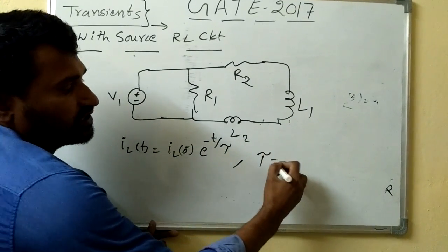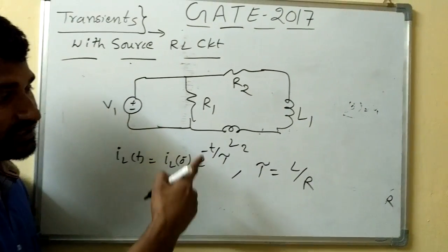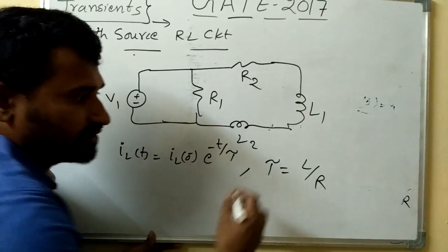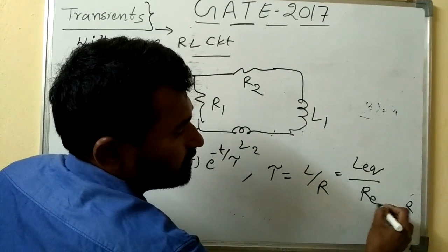Now I told you tau is a time constant which is L by R, but whenever single resistor, single inductor, then it is this. Suppose so many resistors and so many inductors, it will become L equivalent by R equivalent.